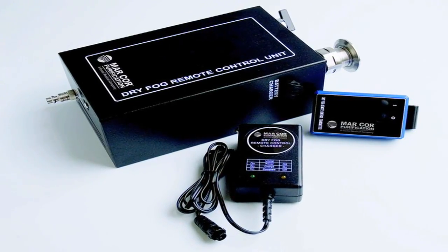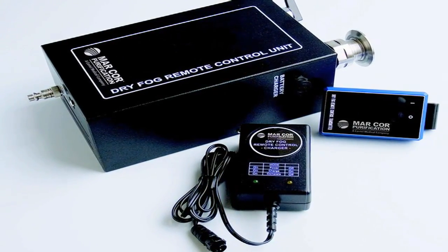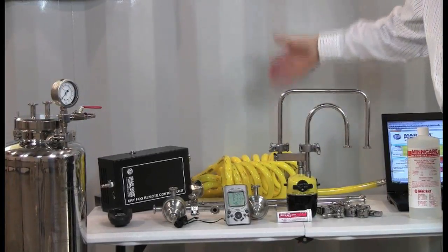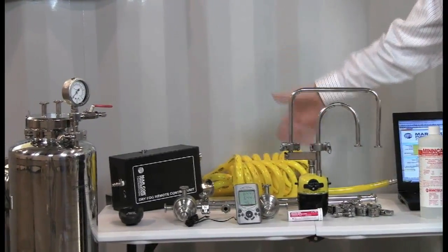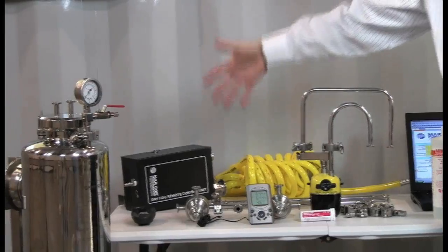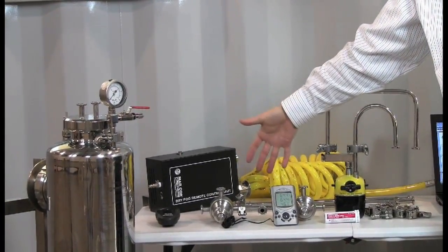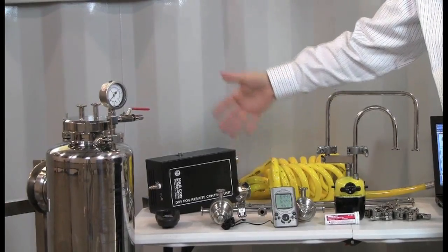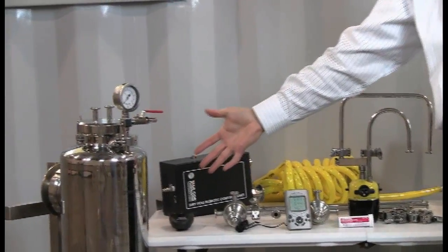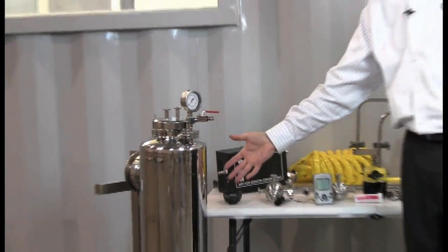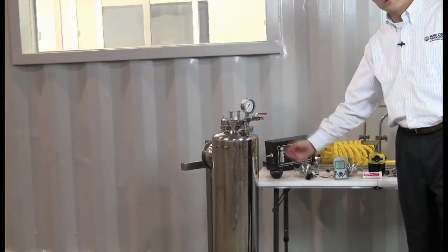Dry fog remote to turn the unit on and off when you're outside the clean room, compressed air connections, different connections and piping, regulator to regulate the compressed air to the tank as well as to the head, and the dry fog machine tank itself, which utilizes MinCare, water and compressed air.